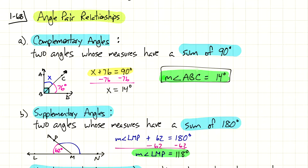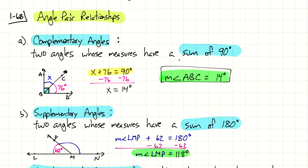The first is complementary angles. Complementary angles are two angles whose measures sum up to 90 degrees. So we're adding up those two angles and the total is 90 degrees. You should already be familiar with 90 degrees, or right angles — we've seen these before.